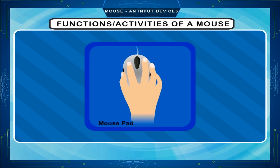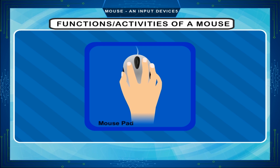Left click or click means pressing the left mouse button once. It is used to select an item or text, or to position the cursor between the text to make a correction.